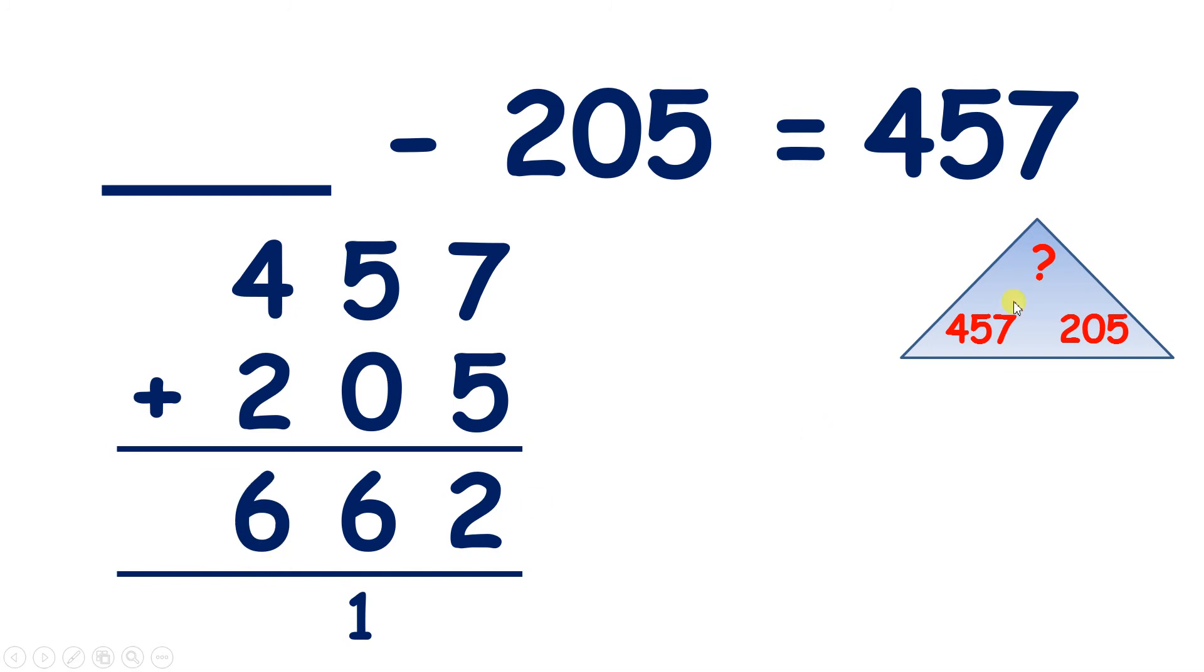So 662 minus 205 equals 457. And if we wanted to be sure that we've got that right, we could do 662 minus 205, and make sure that our answer did come to 457.